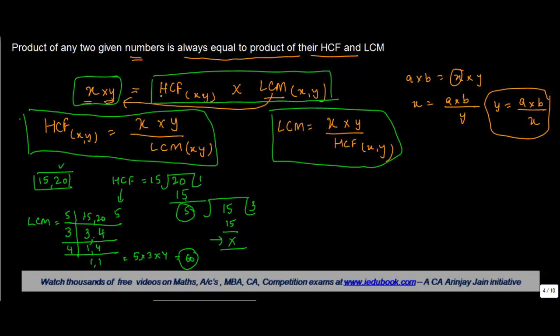So let us see if this equation holds true or not. Now, the product of the two numbers 15 into 20, these are the two numbers that I have, is equal to the product of their HCF. HCF is what? 5 into LCM. LCM is what? 60.